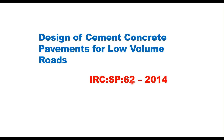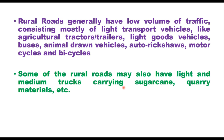Hello friends, today we will discuss design of cement concrete pavements for low-volume roads as given in IRC SP62 of 2014. Rural roads generally have low volume of traffic consisting mostly of light transport vehicles like agricultural tractors, light goods vehicles, buses, animal-drawn vehicles, auto rickshaws, motorcycles and bicycles. Some of the rural roads may also have light and medium trucks carrying sugarcane, quarry materials or similar other products.